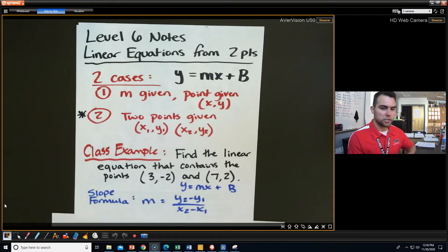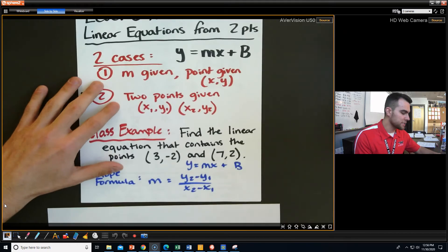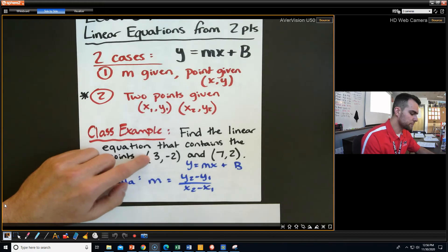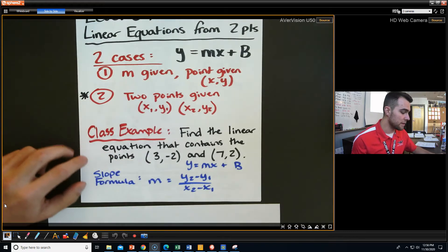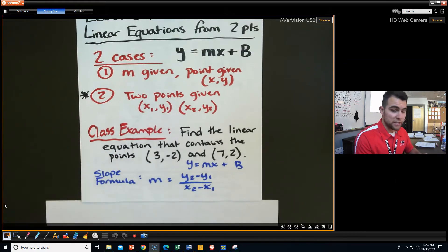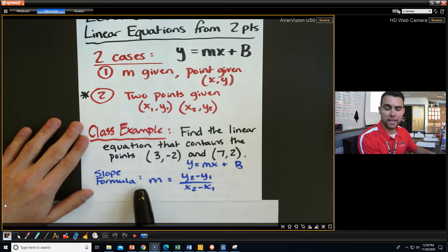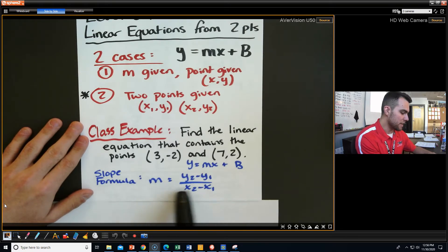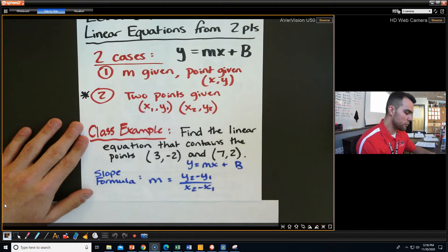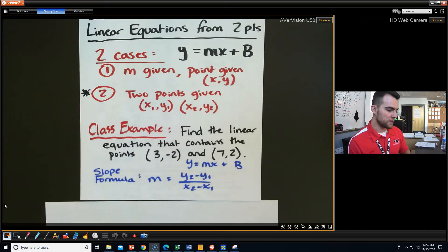So let's figure out how we can do that with an example. Let's jump right in. So we're going to find the linear equation that contains the points (3, -2) and (7, 2). Well, if we want to find the slope, we don't have a graph, but that's not a big deal, because we have our handy-dandy slope formula that we used way back when.